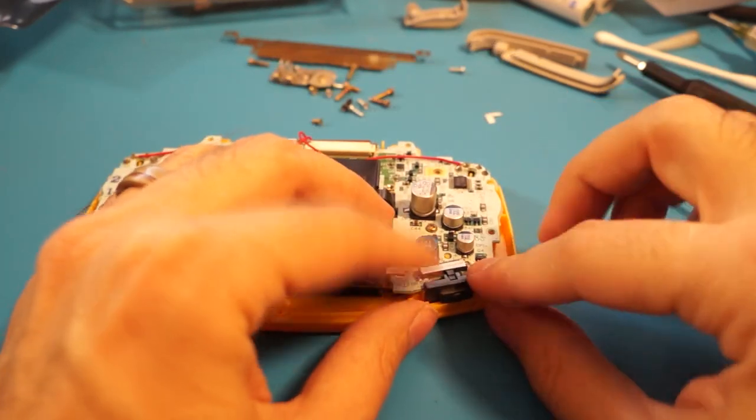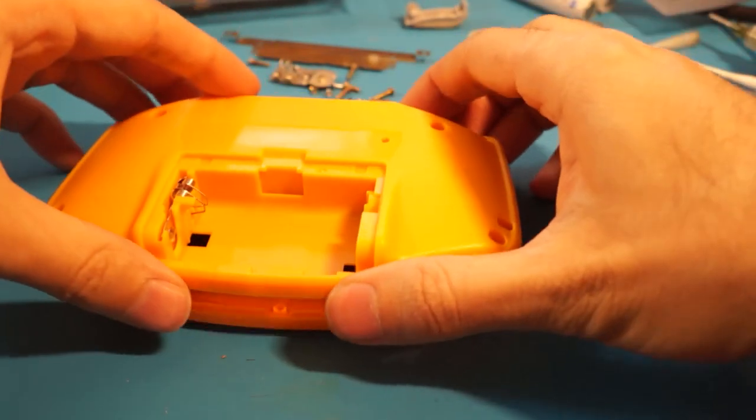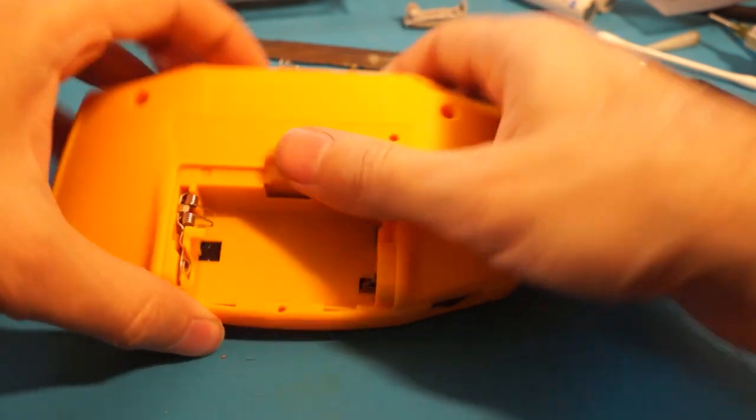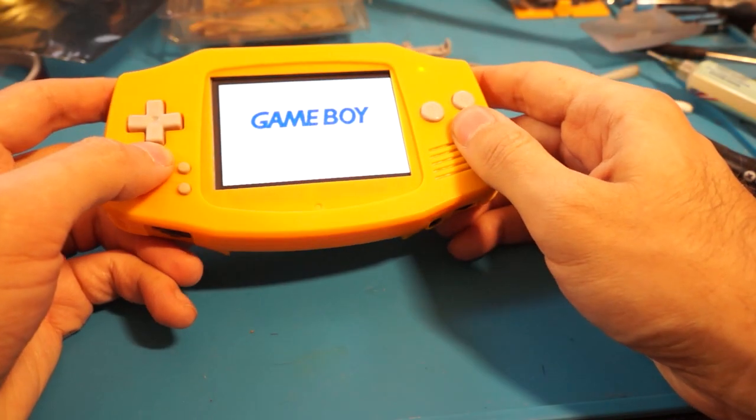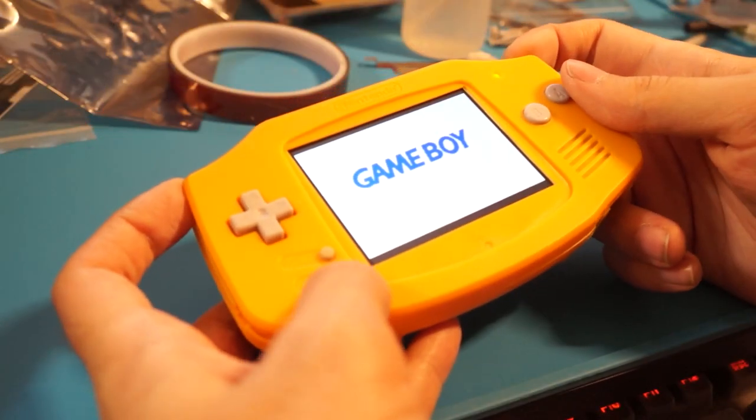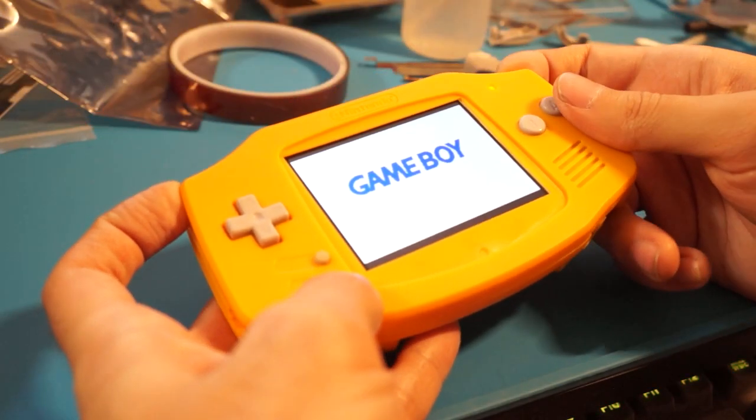Install the shoulder buttons, power switch, and the rear shell. Before screwing anything together, insert some fresh batteries and give it a test. If you installed the brightness control wires, hold select and press L or R to increase or decrease the brightness.